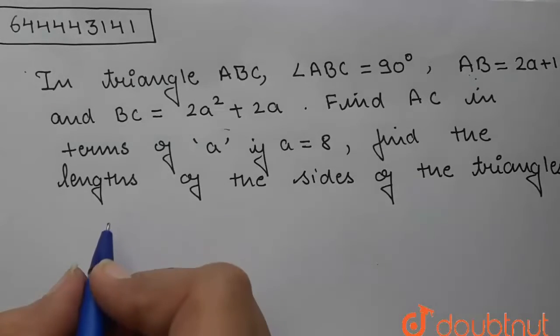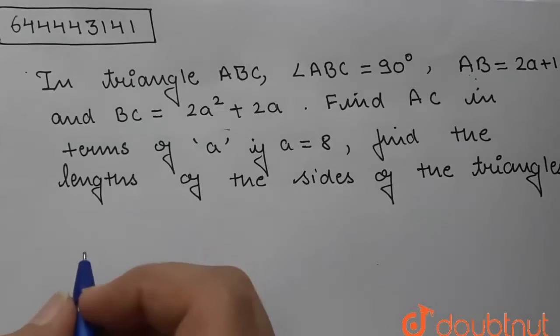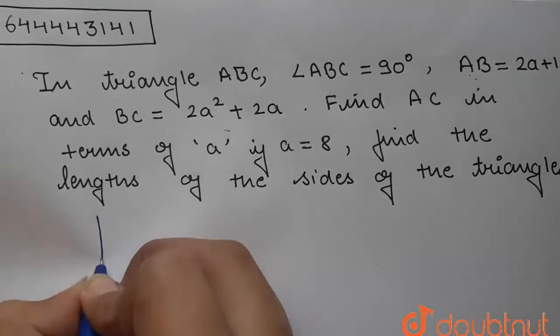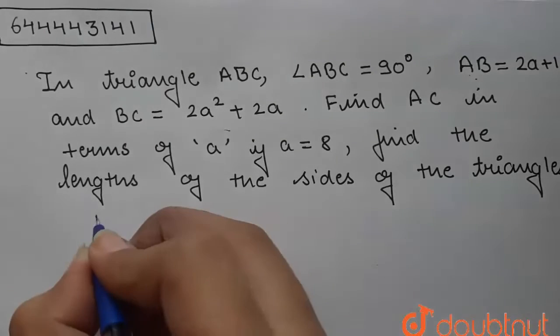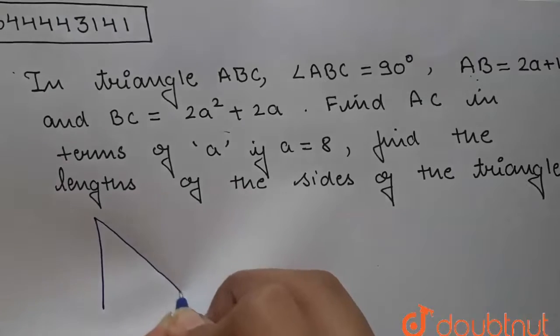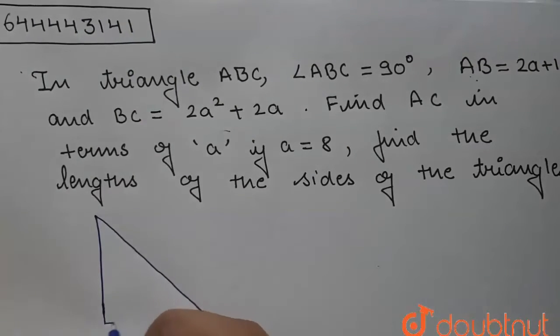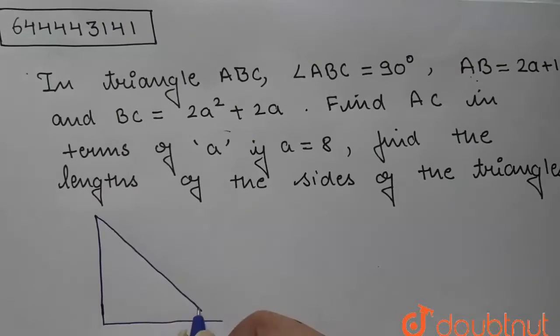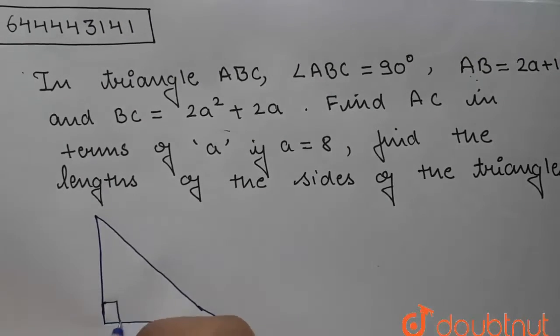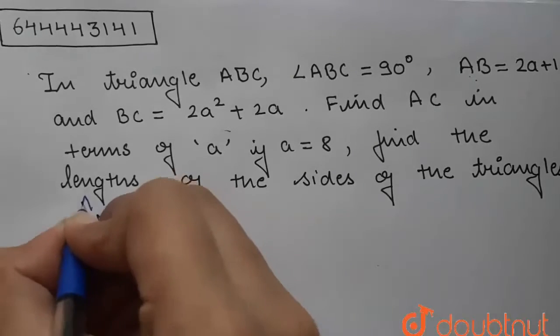So we have to first draw a triangle ABC which is right angled at B. So I am drawing a triangle. This is my triangle ABC which is right angled at B.